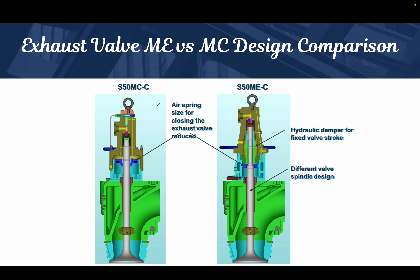Now let's see what are the design changes. The spring area of the old and new designs: if we compare them, the size of the air spring of the old design and the size of the air spring of the new design — the spring piston size is sufficient enough to close the exhaust valve. In the MC engine we need a large air spring piston area to close the valve.